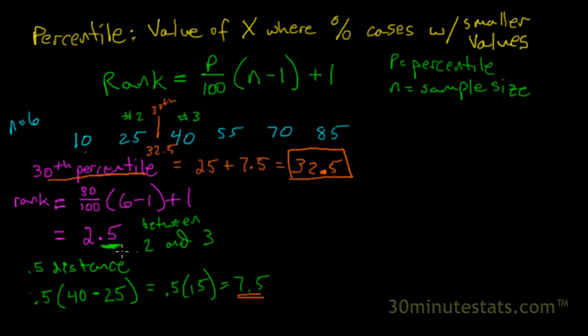We could go through another example here. Let's say that we wanted to find the 75th percentile. So the 75th percentile, let's go ahead and we'll start off again by calculating our rank. Let's calculate our rank, which is going to be 75 divided by 100 times 6 minus 1, our sample size minus 1, plus 1.